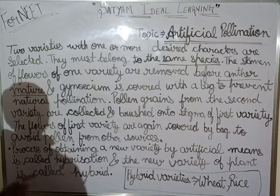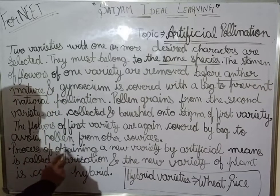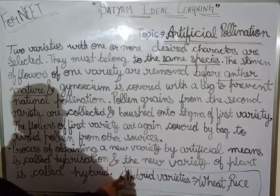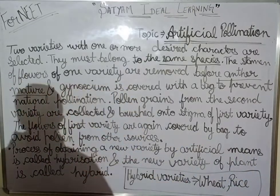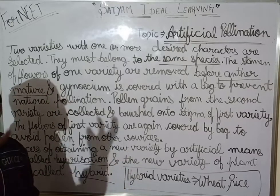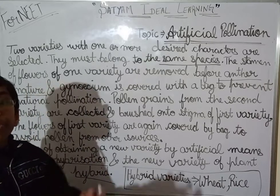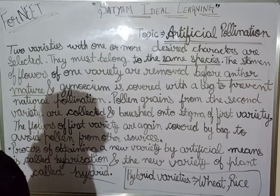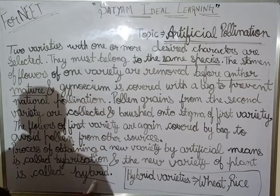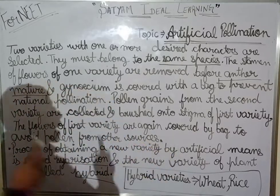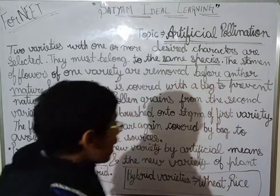Hybridization is a process, and the new variety of plant obtained is called a hybrid. You have to remember these two things: hybridization is the process, and hybrid is the new variety which has been obtained after artificial pollination.